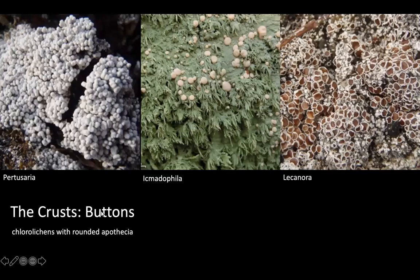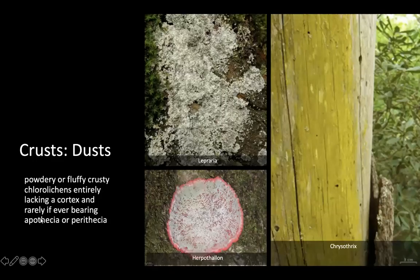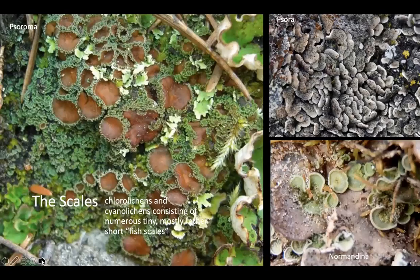Then there are the crust buttons, which are chlorolichens with round apothecia. You can see a variety of forms here. The dusts are crustose lichens that lack a cortex — these are what we call leprose, named after the lichen Lepraria. These lichens rarely, if ever, go through sexual reproduction, so they're primarily reproducing asexually and don't need to produce apothecia or perithecia. Then we have the scales: chlorolichens and cyanolichens consisting of numerous tiny short fish scales, kind of like shingles.